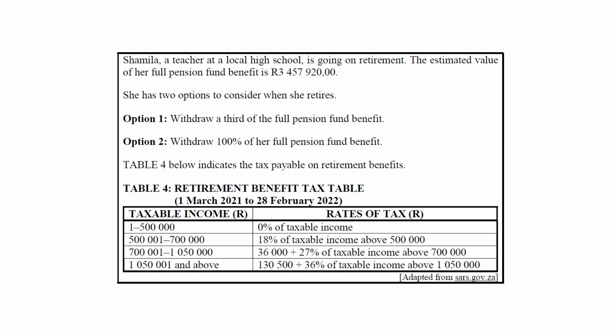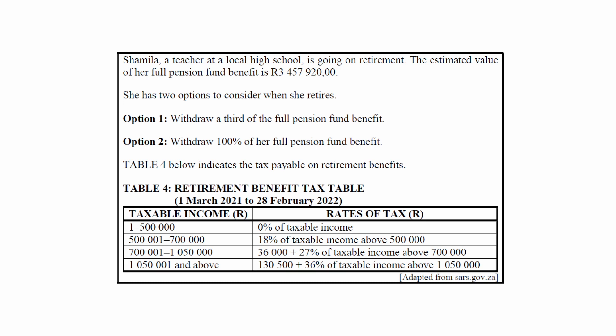This person has two options when she retires. Option 1: withdraw a third of the full pension fund benefit. Option 2: withdraw 100% of the full pension fund benefit. You are also given the retirement benefit tax table.